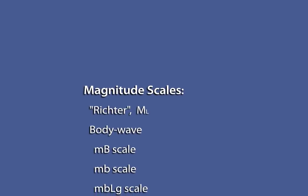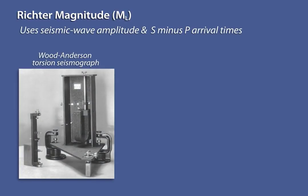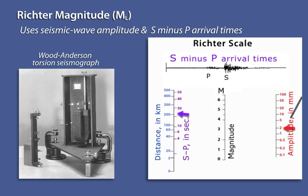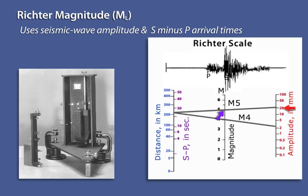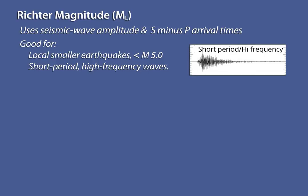Each method of determining magnitude has its own limitations. Two examples are the Richter and moment magnitude scales. The Richter magnitude, recorded on a certain type of seismograph that was common in the early 20th century when this scale was developed, relates the maximum amplitude of the seismic waves plotted against distance, which is calculated by S minus P arrival times. Connecting the two gives the Richter magnitude. This scale is good for local, smaller earthquakes below magnitude 5, which produce most of their energy as short-period, high-frequency waves. But the scale is not as effective for larger earthquakes.